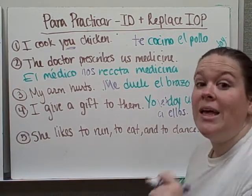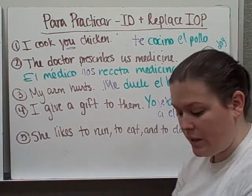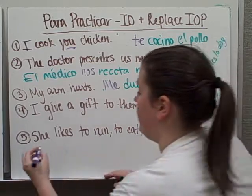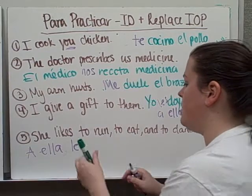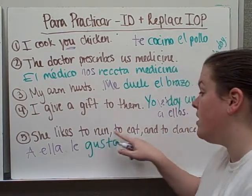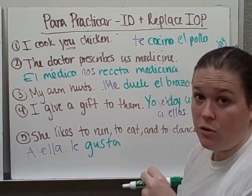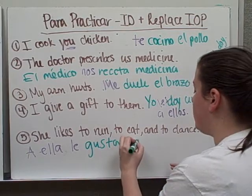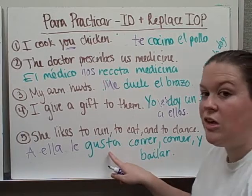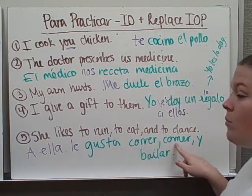Last one: she likes to run, to eat, and to dance. To like to do something is gustar. She likes — these things are pleasing to whom? To her — le. Since le doesn't tell us whether it's he, she, or formal you, add a ella in front: a ella le gusta correr, comer, y bailar. Remember, when these are action words, gustar is never plural if followed only by verbs — only if followed by items would it be gustan. After verbs like gustar, doler, and querer, all verbs that follow stay in the infinitive. Nothing changes.